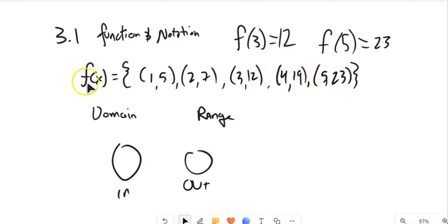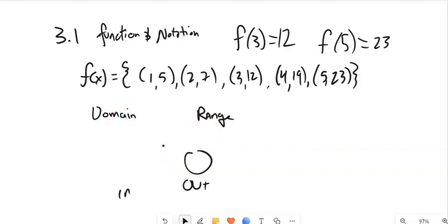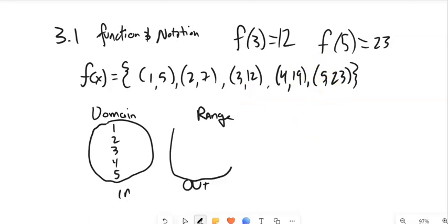So notice what I have is a collection of inputs and a collection of outputs. And that would be my domain and my range. So my domain is all my inputs. So if I think about what my domain is, in this case, I can list them. Well, it's the x values. It's 1, it's 2, 3, 4, and 5.